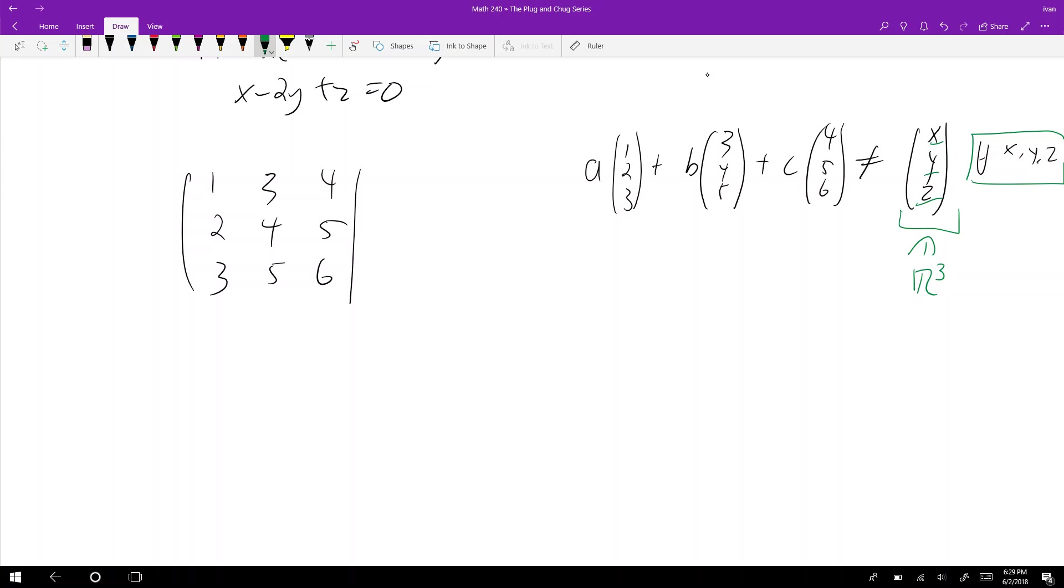For every x, every y, every z needs to be hit by this linear combination where a, b, and c are scalars multiplied by these three vectors. This is actually a system of equations we're solving, so on the right hand side I want to see if it equals (x,y,z) for any x, any y, any z.